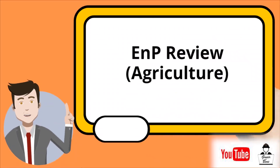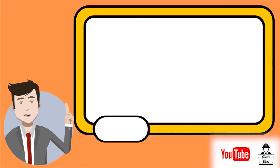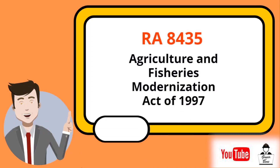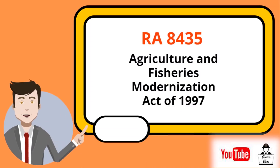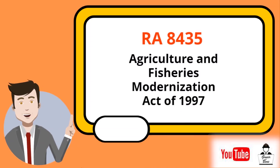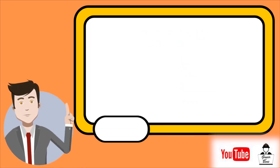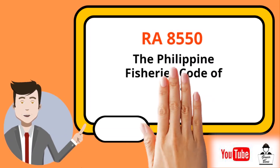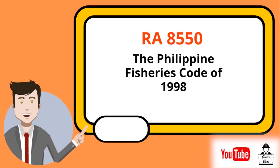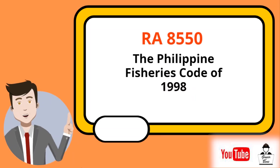Environmental Planning Review related to Agriculture: R.A. 8435, the Agriculture and Fisheries Modernization Act of 1997; and R.A. 8550, the Philippine Fisheries Code of 1998.